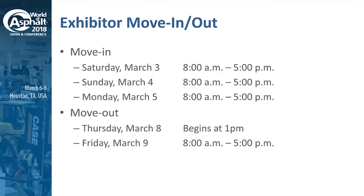For exhibitor move-in and move-out, GES will get into a lot of this detail shortly, but we wanted to highlight the schedule. Move-in kicks off Saturday, Sunday, and Monday — you should have already received your target dates from GES. For move-out, the show floor closes at 1 p.m. on Thursday, so move-out cannot start until after 1 p.m. on Thursday, and we bleed over into Friday as well.